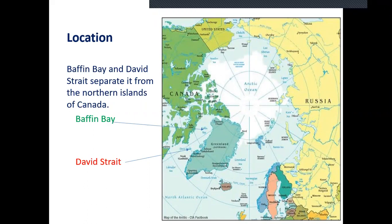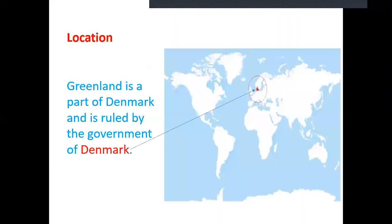Greenland is separated from Canada by two water bodies: one is Baffin Bay and Davis Strait. Greenland is a part of Denmark and it is ruled by the government of Denmark. Denmark is one of the European countries, so Greenland is also considered as a European country.